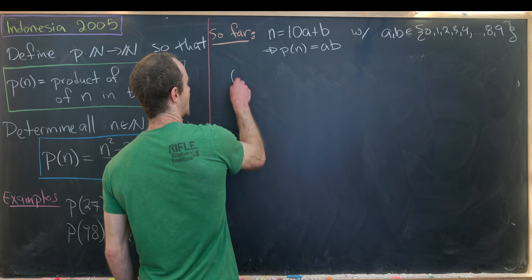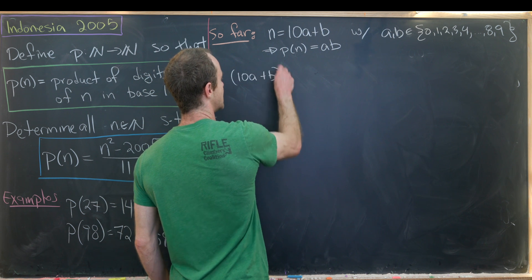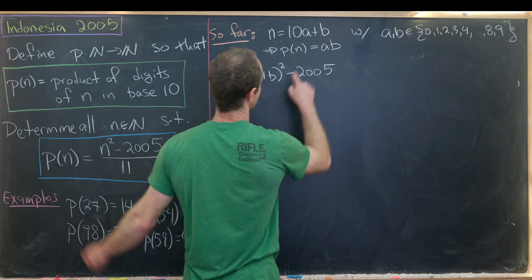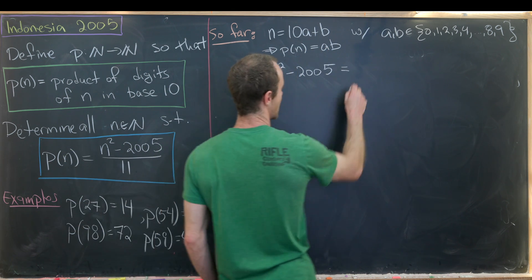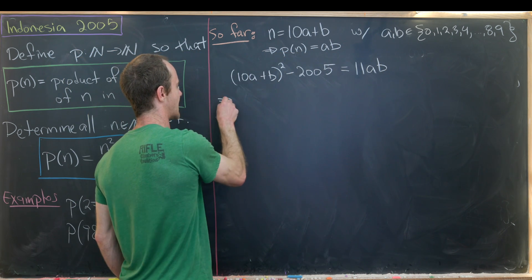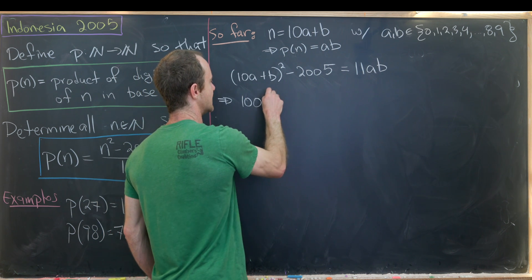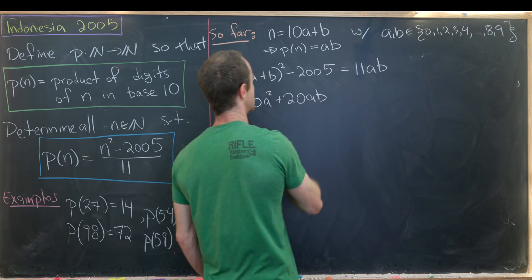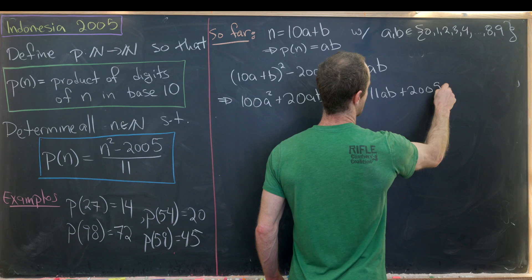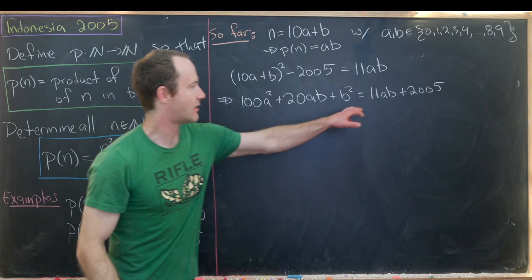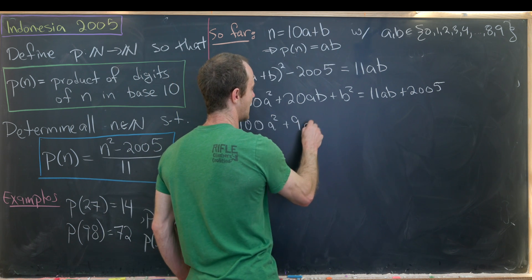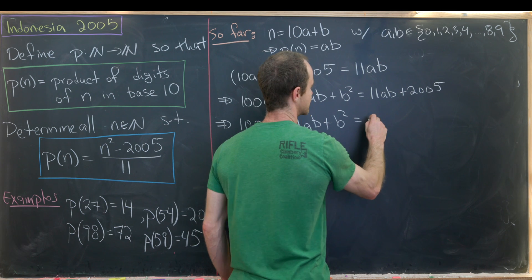So let's see putting this setup into our goal equation now turns into the following equation. So we'll have n squared minus 2005 so that's 10a plus b squared minus 2005 all over 11 equals p of n but that's a times b. I'm actually going to multiply the 11 up and get 11 a times b. So now let's move some things around. Let's maybe like square this out. So that's going to be 100 a squared plus 20ab plus b squared equals 11ab plus 2005. I moved things around so this becomes 100a squared plus 9ab plus b squared equals 2005.